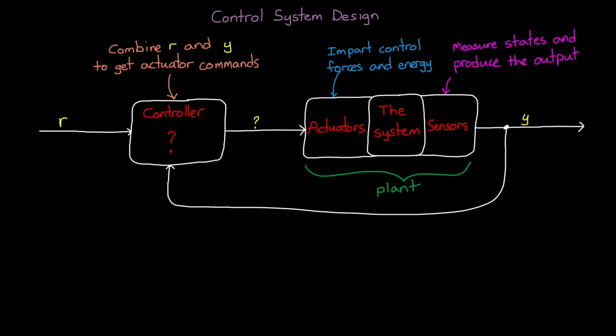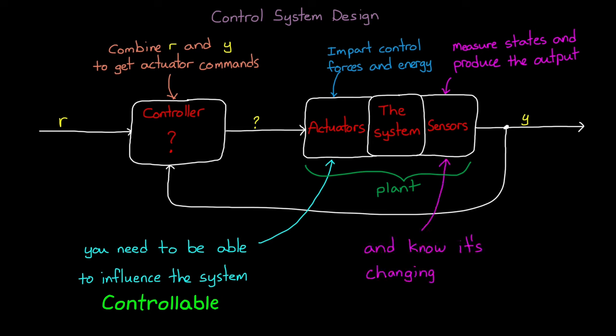However, your controller design is bound to fail if your system doesn't have the appropriate actuators that can affect the right parts of the system or if you don't have the appropriate sensors in place that can measure the right states. Without both of those, you won't be able to adequately influence the system. It won't be controllable. Or you won't know how the system is changing. It won't be observable.